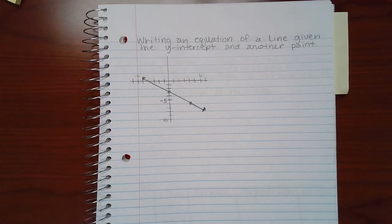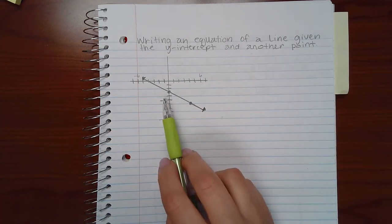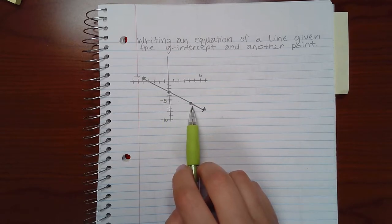This topic is writing an equation of a line given the y-intercept and another point. So we have two points here. This one is the y-intercept and this is the second point.